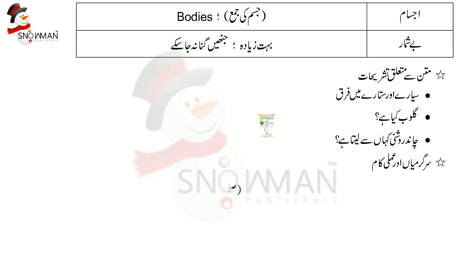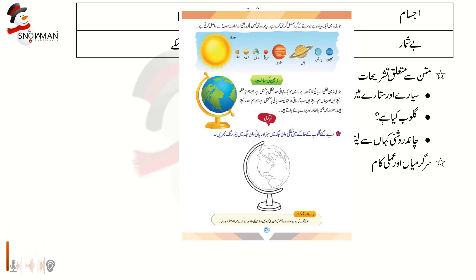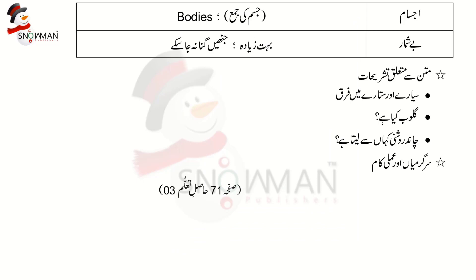صفحہ نمبر 71 پر یہ سرگرمی ہے کہ دیے گئے گلوب کے خاکے میں خشکی والی جگہ میں سبز اور پانی والی جگہ میں نیلا رنگ بھریں۔ یہ حاصلِ تعلیم نمبر تین ہے۔ سرگرمی یہ کروانی ہے کہ گلوب کی مدد سے سمندروں اور بریازموں کی پہچان کرائیں۔